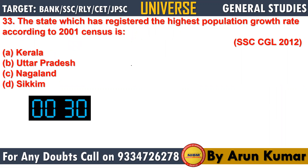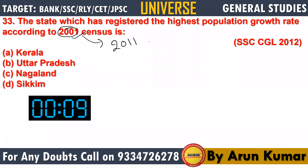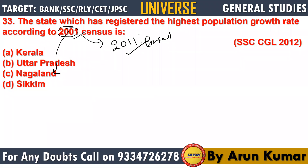Question 33: the state which has registered the highest population growth rate according to the 2001 census — the answer is 19.89 percent. Moving on to the next question.